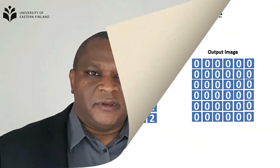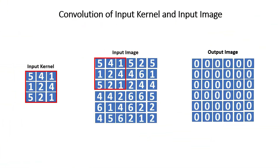I would also like to remind you that in image processing, a kernel, convolutional matrix, or mask is a small matrix used for blurring, sharpening, or edge detection, or any other operation. In this example for edge detection, we use a small matrix or kernel of the size 3x3.